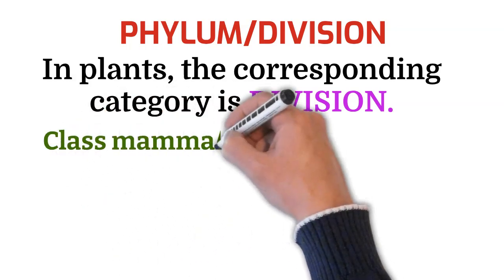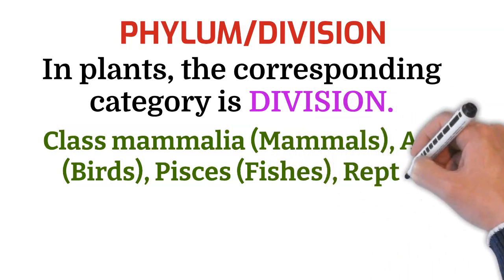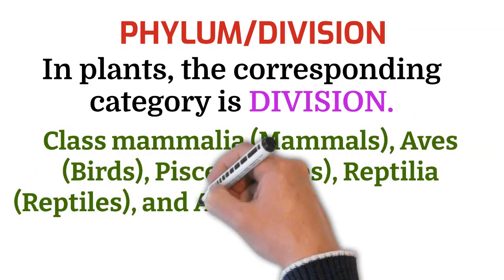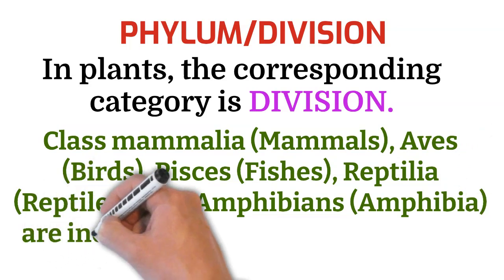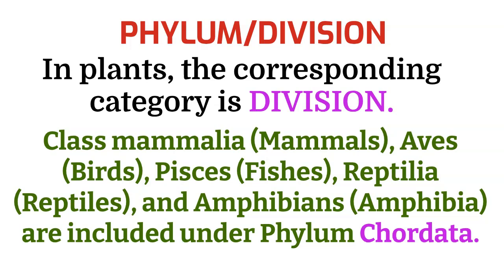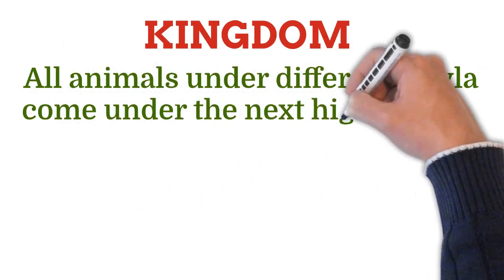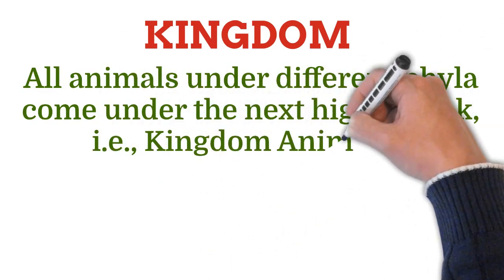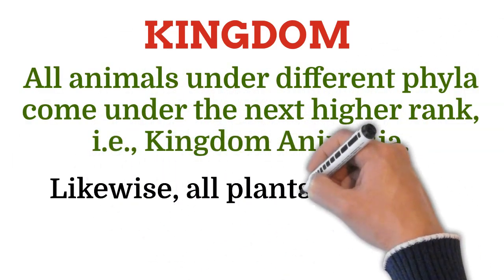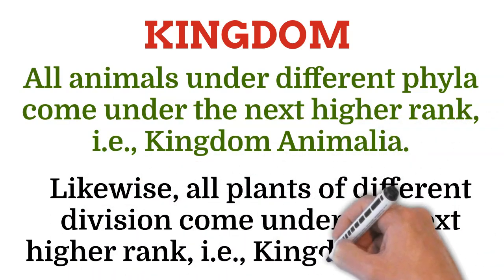For example, class Mammalia (mammals), Aves (birds), Pisces (fish), Reptilia (reptiles), and Amphibia (amphibians) are included under phylum Chordata. The last and highest rank is kingdom. All animals under different phyla come under kingdom Animalia. Likewise, all plants of different divisions come under kingdom Plantae.